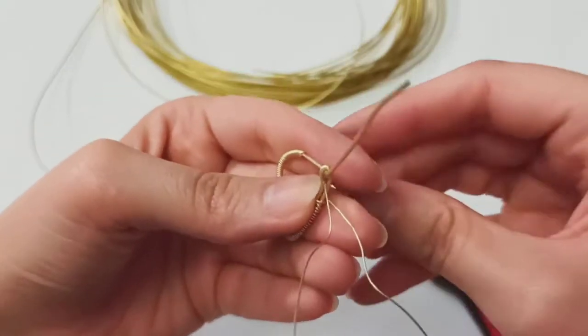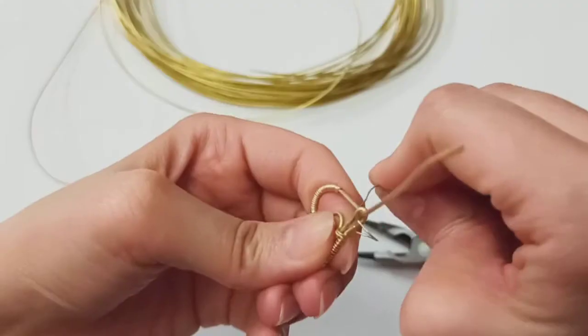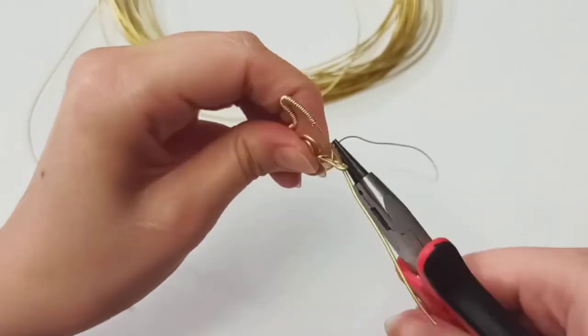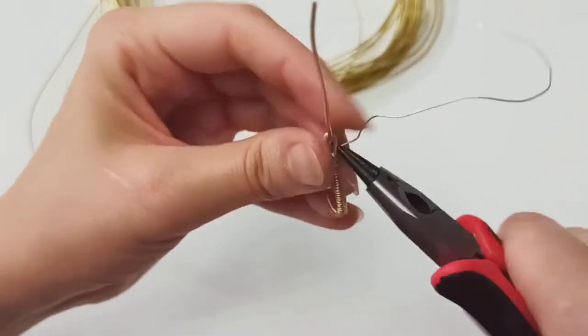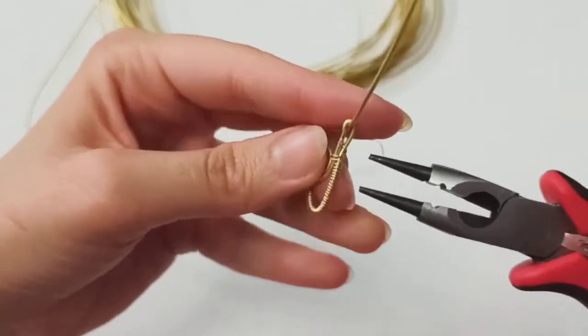Make a tie here and continue doing that with a specific pattern. For example, one double, one double knot, and then a single one.